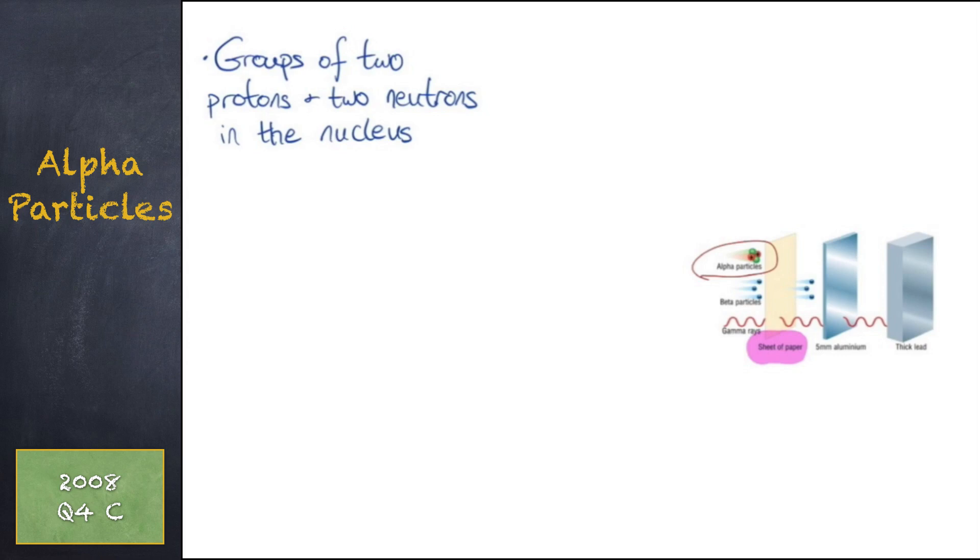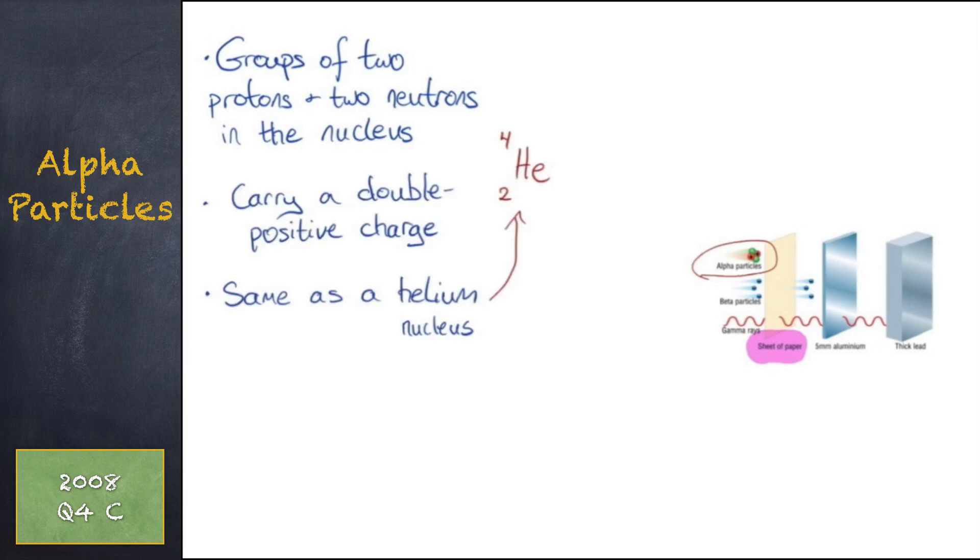Alpha particles are emitted from unstable nucleus of a radioactive element. The particles consist of two protons and two neutrons stuck together. Alpha particles carry a double positive charge. They are the same as the nucleus of a helium atom.